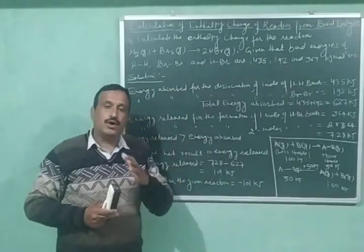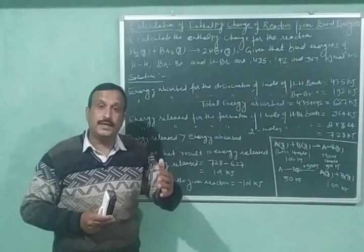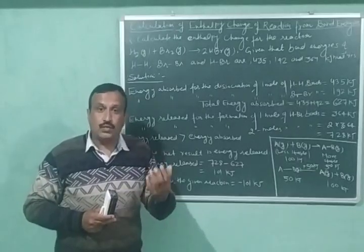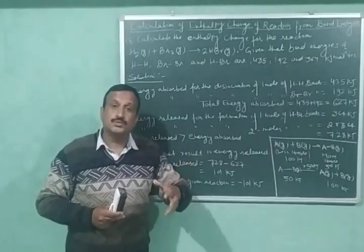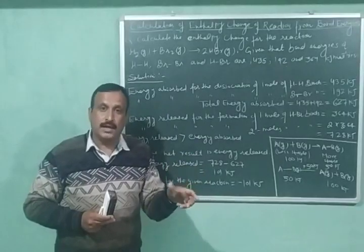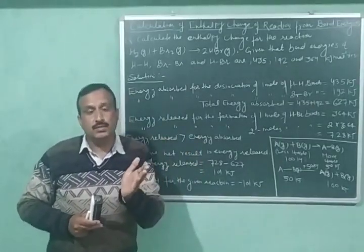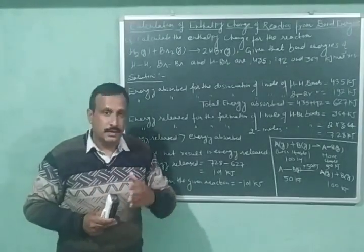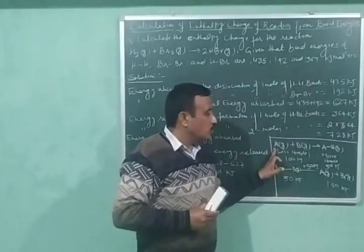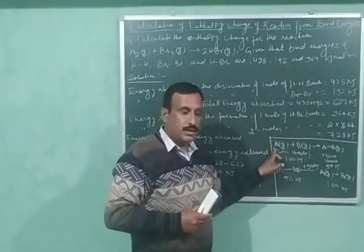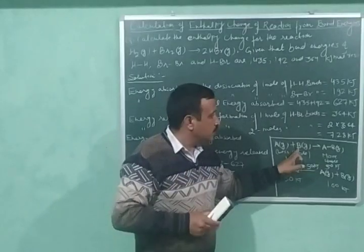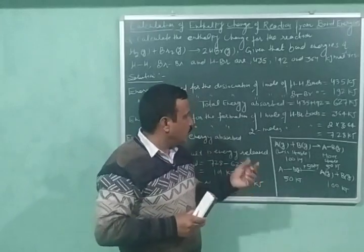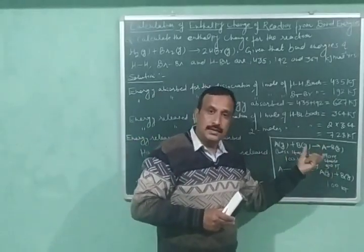When a molecule is formed from its atoms and a chemical bond is formed, energy is released. Why? Because a molecule is more stable than its atoms. When a less stable system is converted into a more stable system, energy is released. Here, one mole of A atoms is combining with one mole of B atoms giving us one mole of AB molecule, and the molecule is more stable than the atoms.